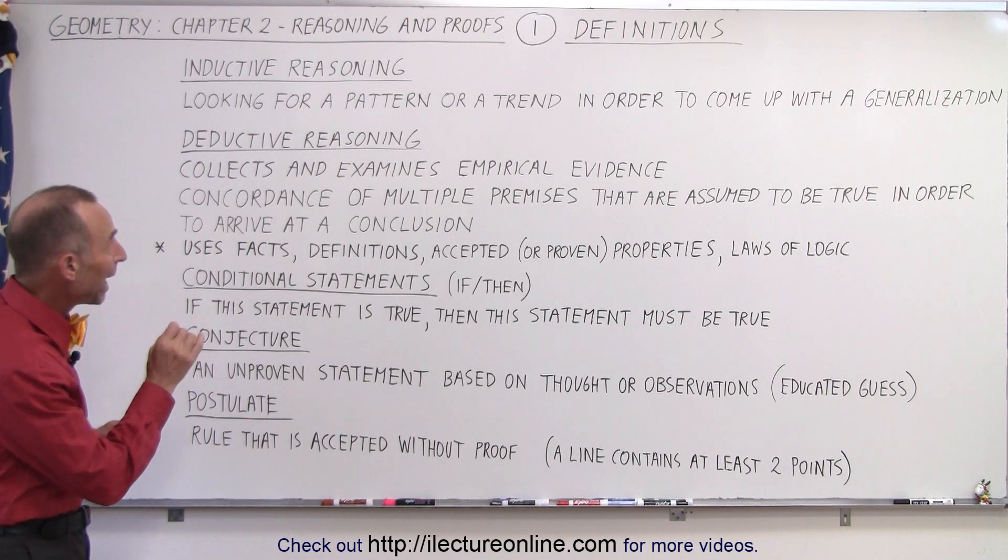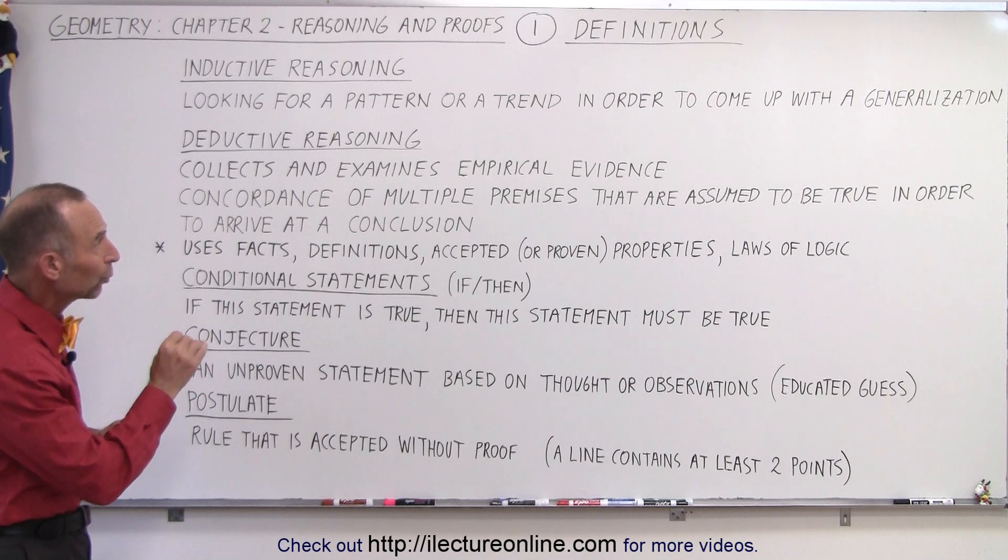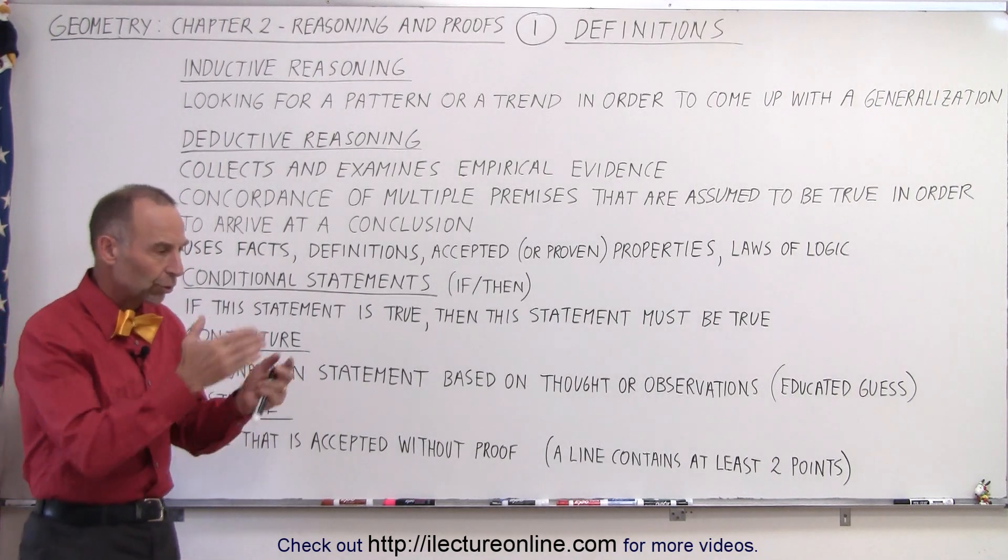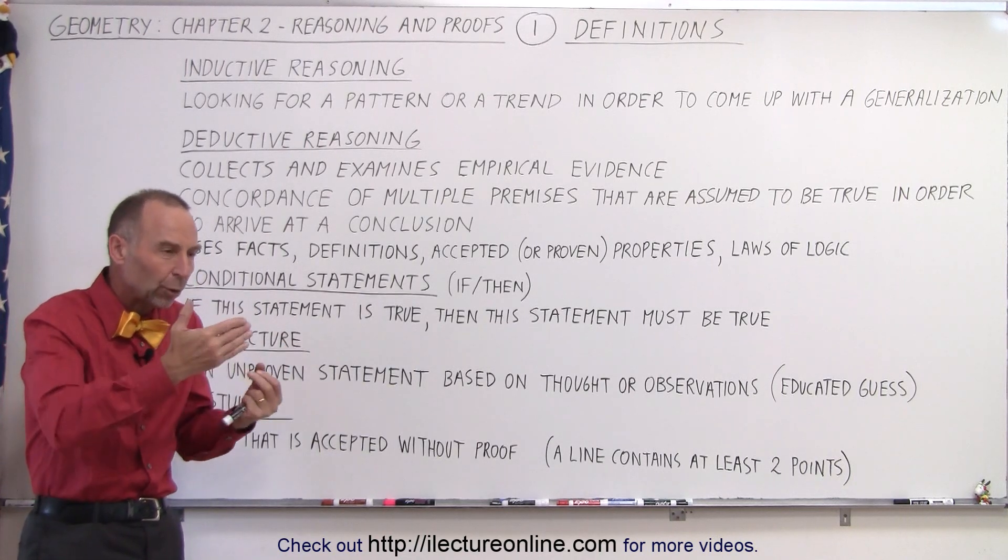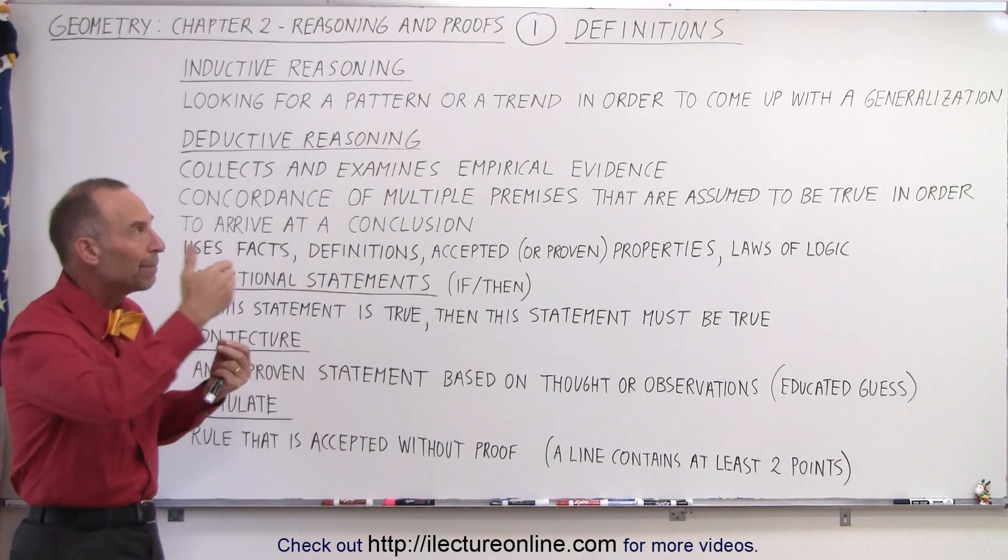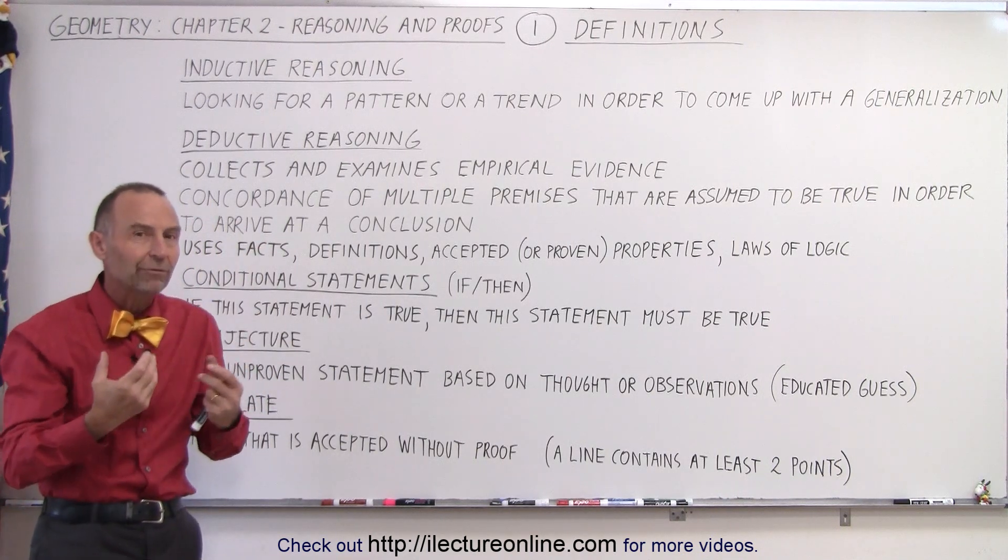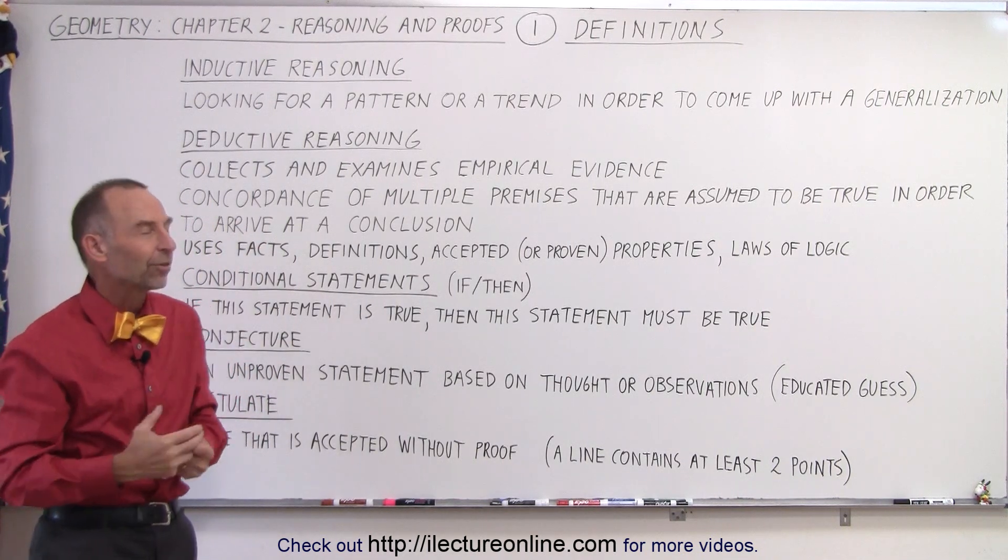We're looking for a pattern or a trend in order to come up with a generalization. Sometimes you're shown a bunch of numbers, and you're supposed to try to figure out what the next number will be based upon the pattern of the trend that we can visualize. So we're going to try some examples of that.